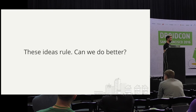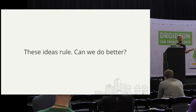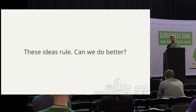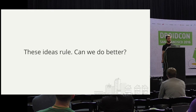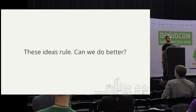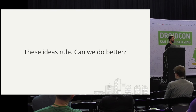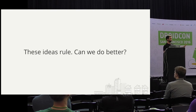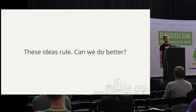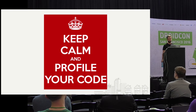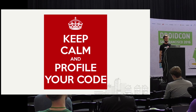So these ideas both rule. We've got the install receiver, which kind of eliminates the first starts. And then we've got this lazy dex loading, which is an entirely different idea but can be a huge win for a lot of applications. Can we do even better than that? So far we've treated the Multidex library as a black box — let's profile and see if there's anything we can do to get an even better win.